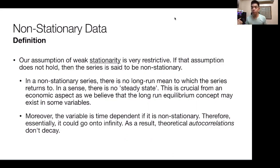Our assumption that we've had, which is of weak stationarity, tends to be quite restrictive. And the thing is, if that assumption doesn't hold, then the series is said to be non-stationary. So if you recall, we have two types of stationarity, that's weak and strict. Now, if weak doesn't hold, then it appears that the series is non-stationary.